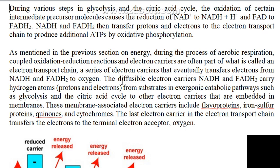Now, how does electron transfer take place? The diffusible electron carriers — NADH and FADH2 — carry hydrogen atoms, meaning protons and electrons. These protons are present inside the cytoplasm of the bacterial cell and in the mitochondrial matrix of the eukaryotic cell. These substrates transfer electrons to the next level of electron acceptors.